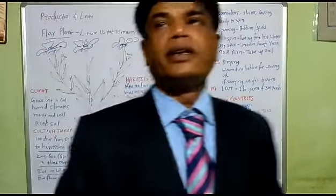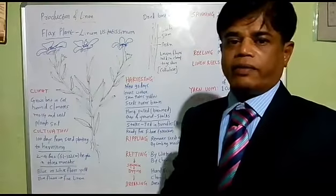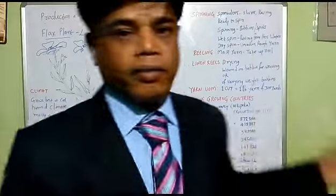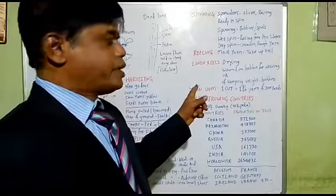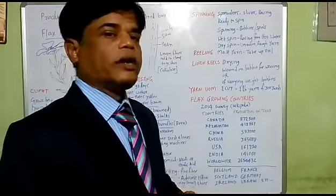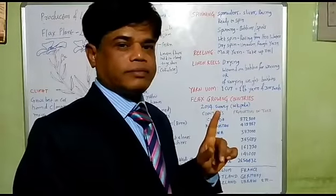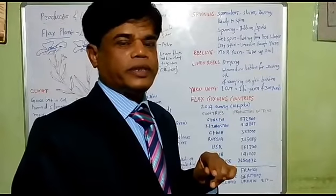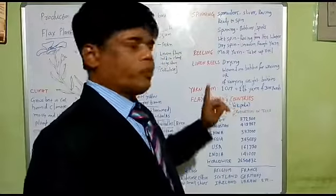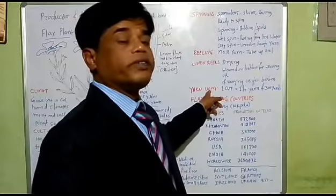In cotton, the fineness of spun yarns is measured in English count — 840 yards weighing 1 pound equals one count. Similarly, in linen or flax, the unit of measurement is different: 300 yards of linen yarn weighing 1 pound, or 453.4 grams, is called one cut. Nowadays we use counts like 20, 30, 40 — here one cut equals a length of 300 yards weighing 1 pound. That is the unit of measurement of yarn fineness.